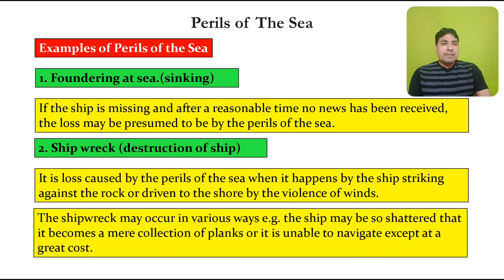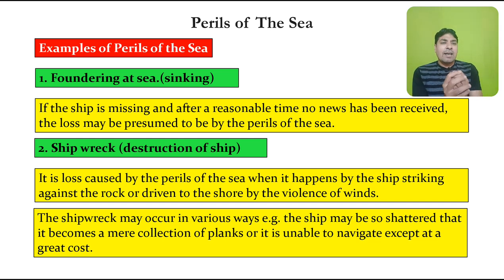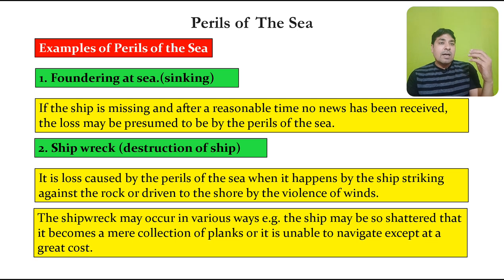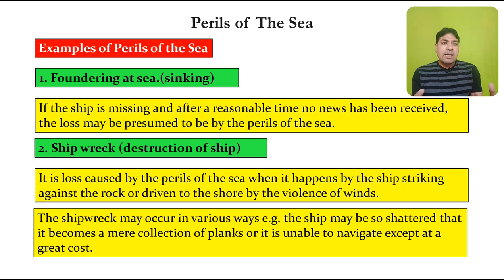Ship wreck may occur in various ways. A ship may be so shattered that it becomes a mere collection of planks, or it is unable to navigate except at great cost. If even collecting those pieces would cost a great amount, this helps us identify that it is a ship wreck due to the violent act of winds and waves — and the insurance company will be liable to pay such a loss.